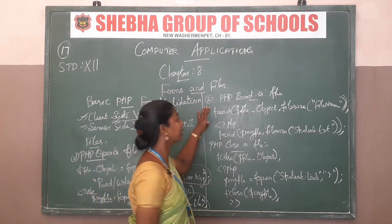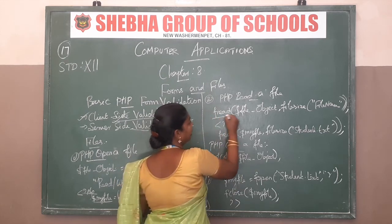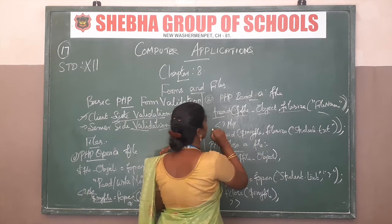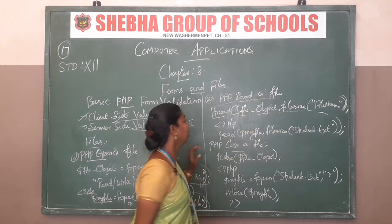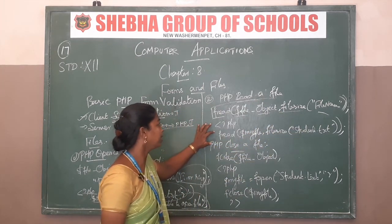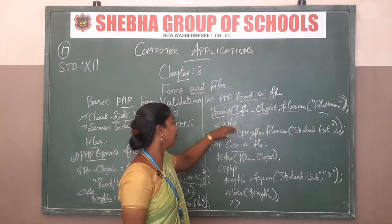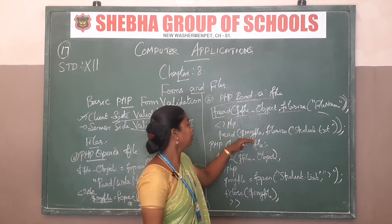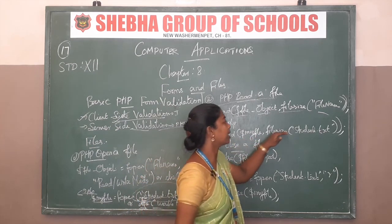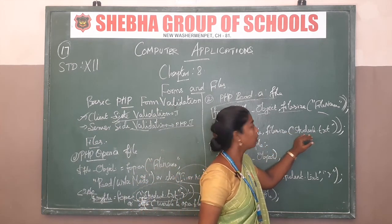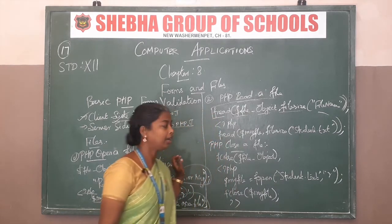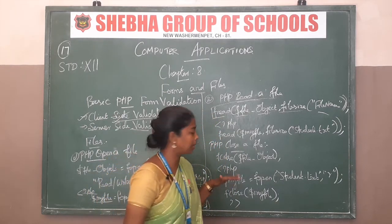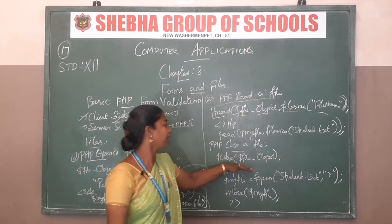The second concept is read a file — fread — with file size and file name. This is the syntax of read a file. The example in PHP uses fread with my file and file size, and this is the file name. Then close the file — syntax is fclose with file object.